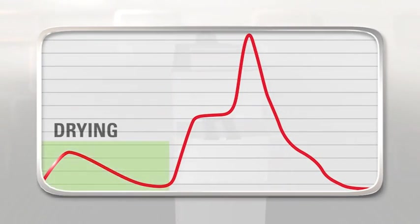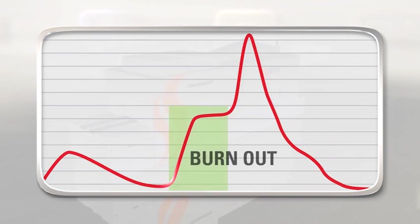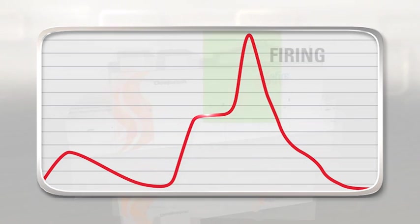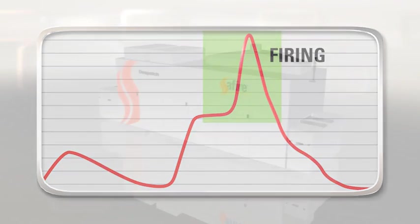VOC removal is decoupled from the burnout process to prevent furnace and facility contamination and to increase yields. Burnout is decoupled from firing to ensure proper binder removal and the firing zone remains contamination-free, producing a stable and repeatable thermal experience.